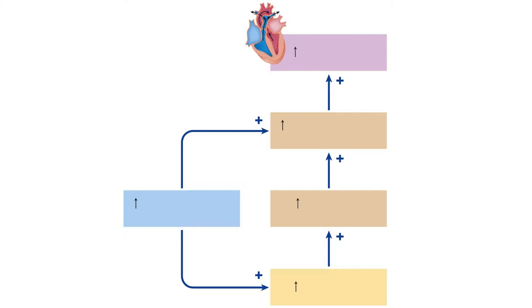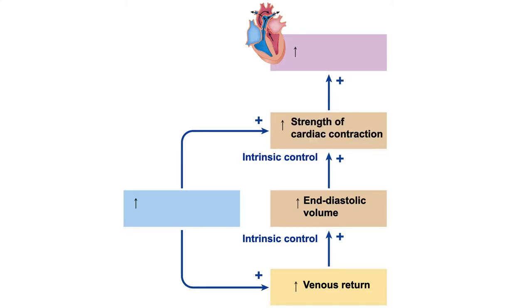To summarize intrinsic control: increased venous return means more blood filling the ventricle during relaxation, which stretches the cardiac muscle, increases actin-myosin overlap, increases contraction strength, and therefore increases stroke volume — more blood is injected out of the heart with each beat.